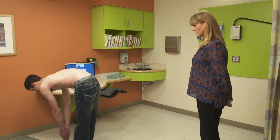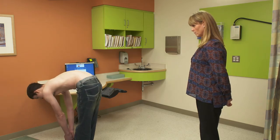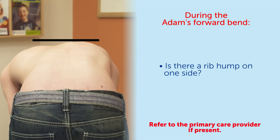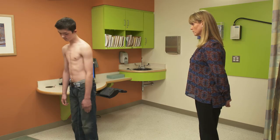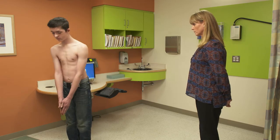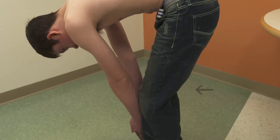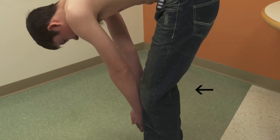Finally, the adolescent should bend forward with the knees extended into the Adam's forward bend test position. Make sure the feet are together, knees straight, the palms of the hands together and head down. Asymmetry of the torso can best be appreciated on the horizon. The lower back can be assessed for further flexion. Use caution, as many adolescents will flex the knees while attempting to bend further due to relative tightness of the hamstrings.